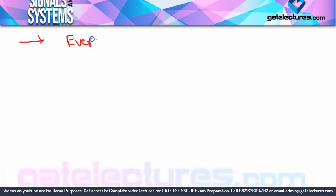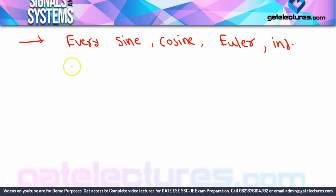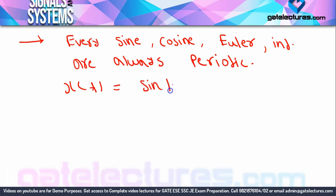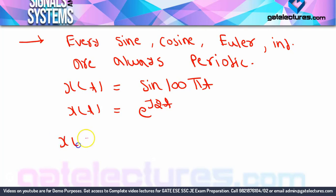An important concept: every sine, cosine, and Euler signal individually is always periodic. So sine, cosine, and Euler signals - if they are individually given, they are always periodic. For example, x(t) = sin(100πt), or x(t) = e^(j2t), or x(t) = cos(300t) - in any format, if individually given, they are always periodic. You don't need to check.